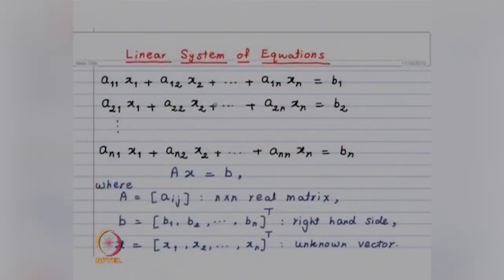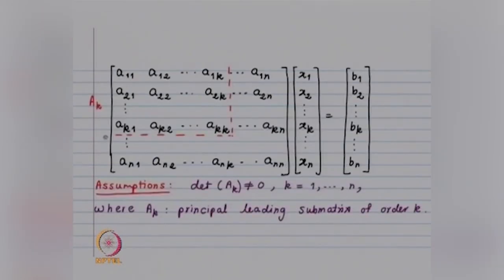Let us recall what we have done last time. We have a system of N equations in N unknowns, which we write in the compact form as Ax = b, where A is the coefficient matrix, b is the right-hand side vector, and x is the unknown vector x₁, x₂, …, xₙ. We assumed that matrix A is such that the principal leading sub-matrix, formed by the first k rows and first k columns, has determinant of Aₖ not equal to 0 for k = 1 up to N. This condition is stronger than invertibility.